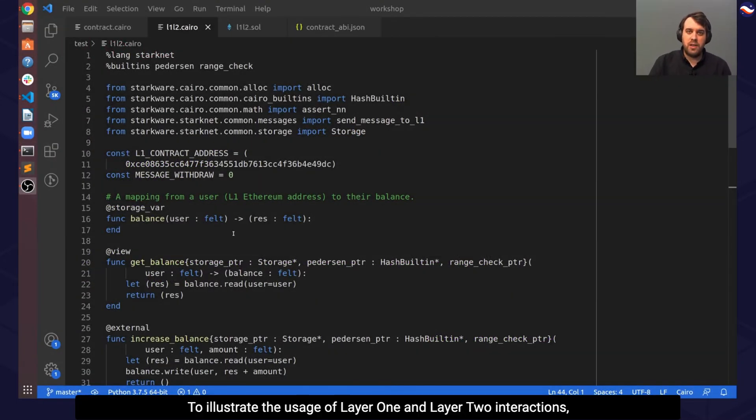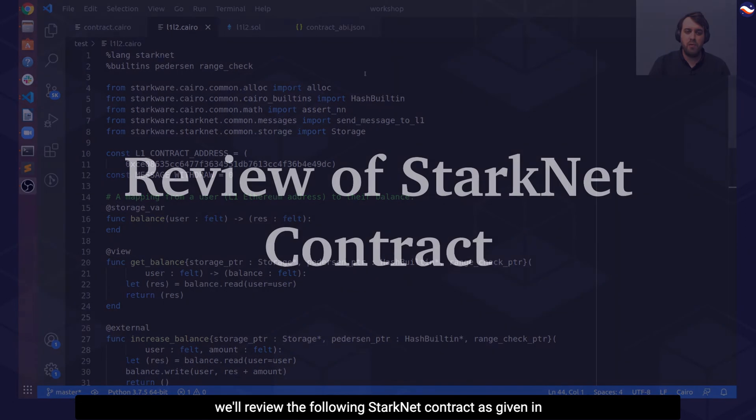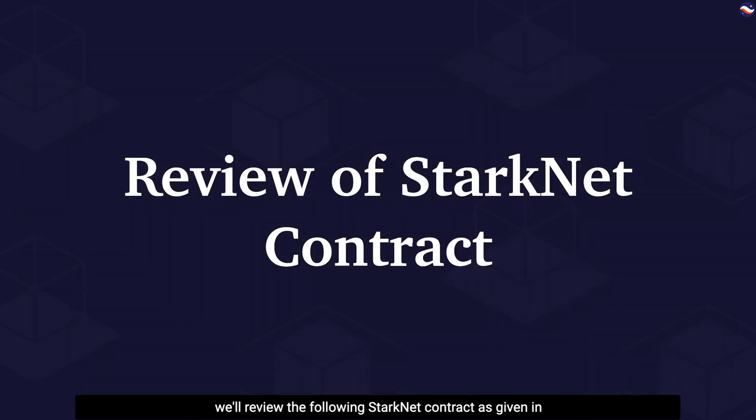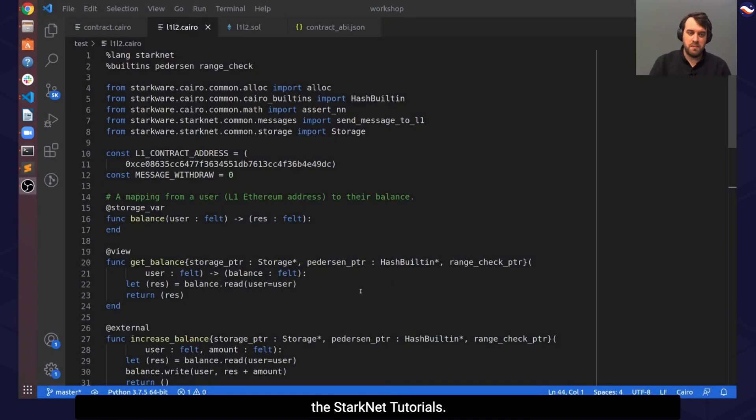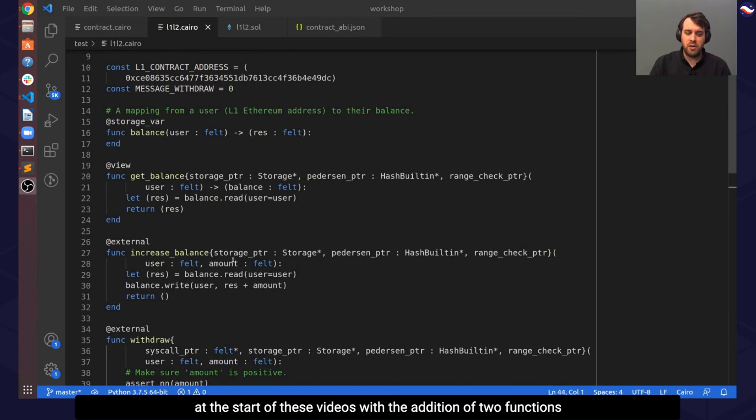To illustrate the usage of Layer 1 and Layer 2 interactions, we will review the following StarkNet contract, as given in the StarkNet tutorials. This contract is similar to the example contract we reviewed at the start of these videos, with the addition of two functions.